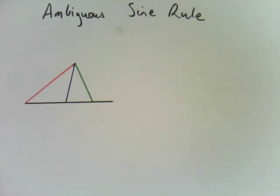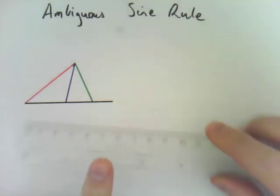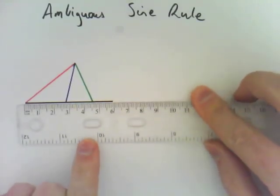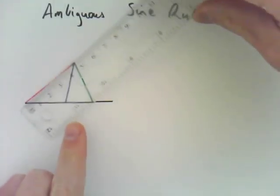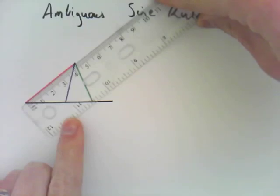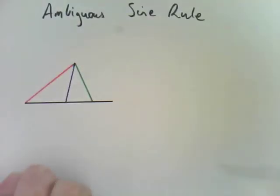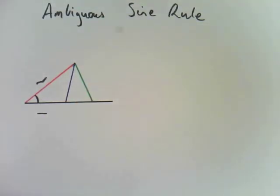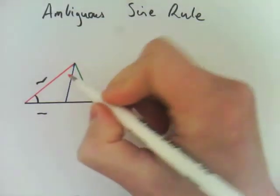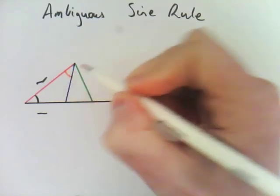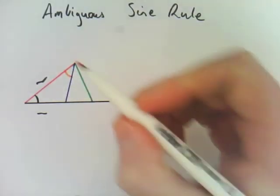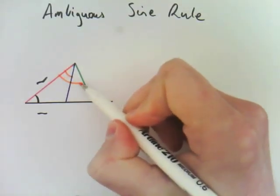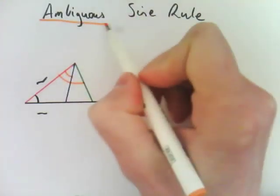So we've got this shape here, a triangle where the bottom line is the black one and the other side is this red one here. So if we knew this angle in here, the angle at the top here could be either an acute angle, so it could be between the red and the blue, or it could be an obtuse angle between the red and the green, and that's why it's called the ambiguous.